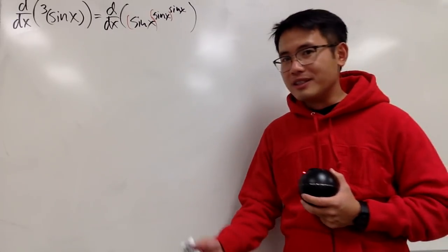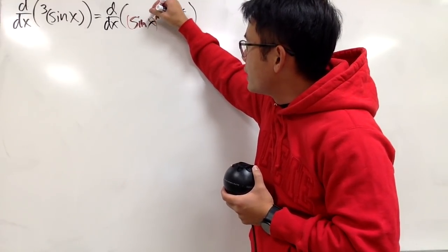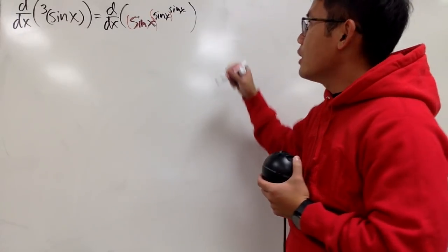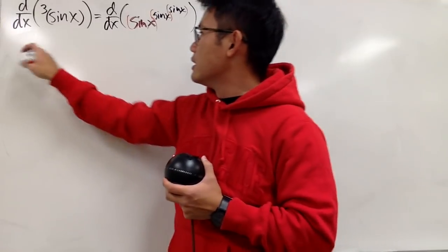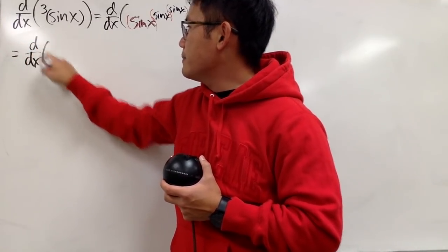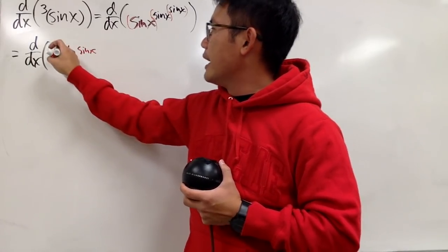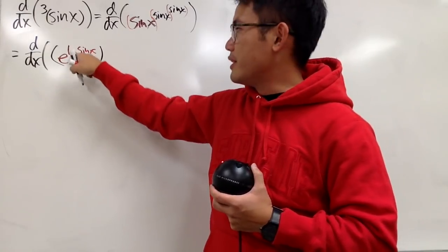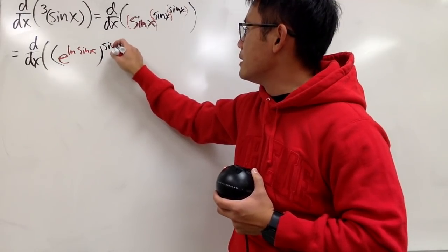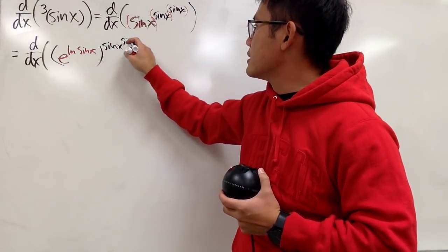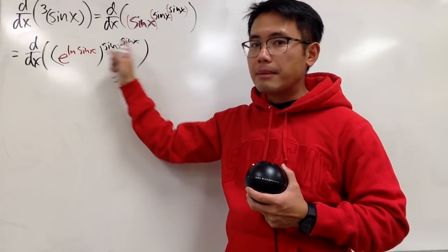Anyway, how can we deal with this? Well, the base right here is sin x, and that's not what we like. We want to have base e. To handle that, I will change that to e to the ln of the expression. So this is the same as differentiating e to the ln of sin x, and then that's sin x still, because e and ln will cancel. Take that, raise to this power, which is sin x to the sin x power.